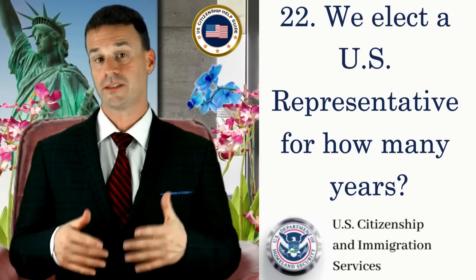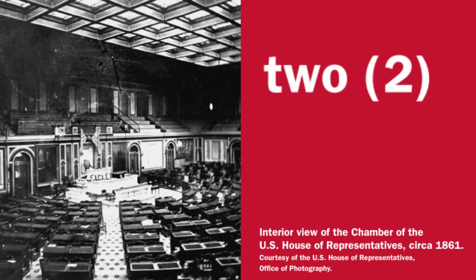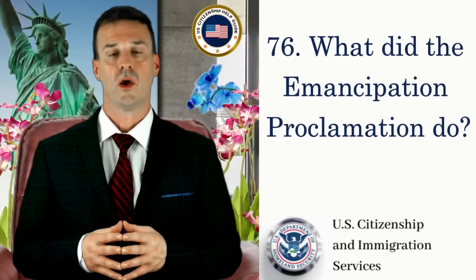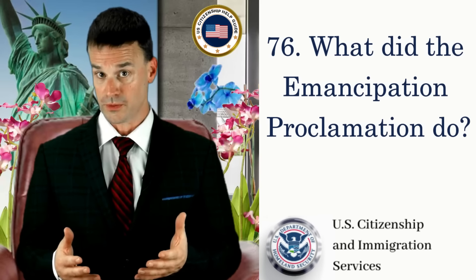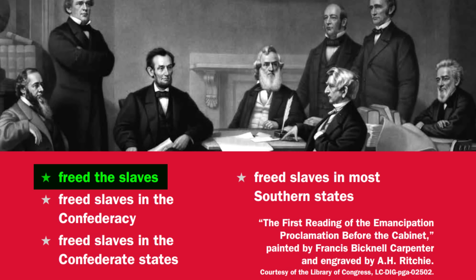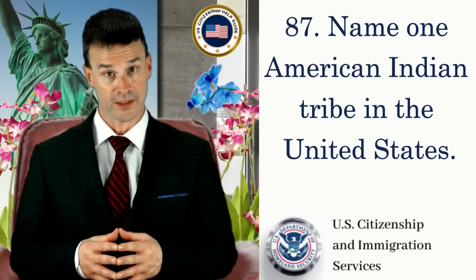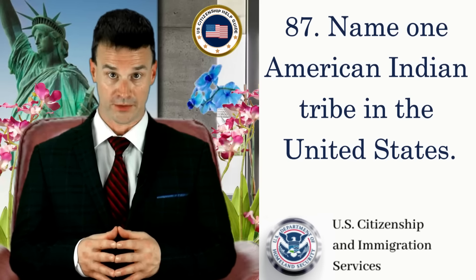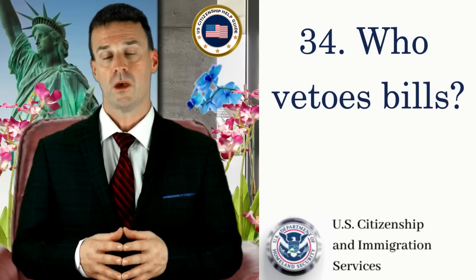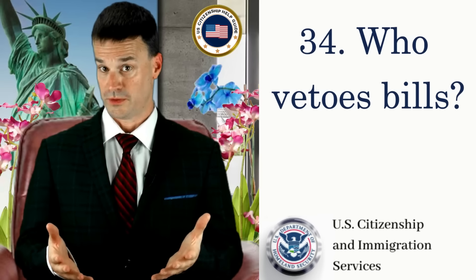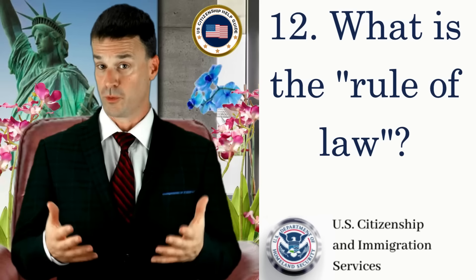We elect a U.S. representative for how many years? Two. What did the Emancipation Proclamation do? Free the slaves. Name one American Indian tribe in the United States. Cherokee. Who vetoes bills? The President.